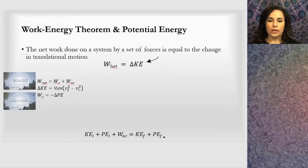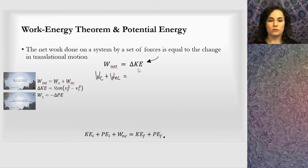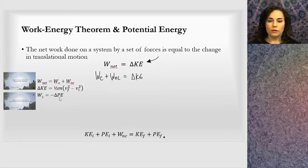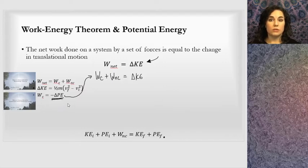When I think about the net work done by a system, I know that the net work can be divided up into work done by conservative forces and work done by non-conservative forces. That will still equal the change in kinetic energy. Well, I can think about the work done by conservative forces instead with their change in potential energy.